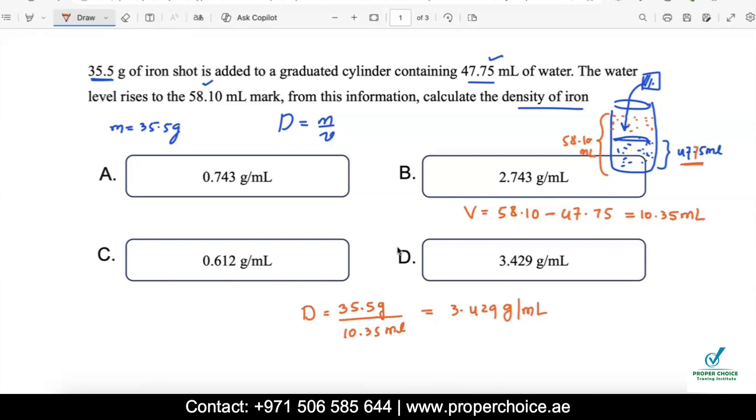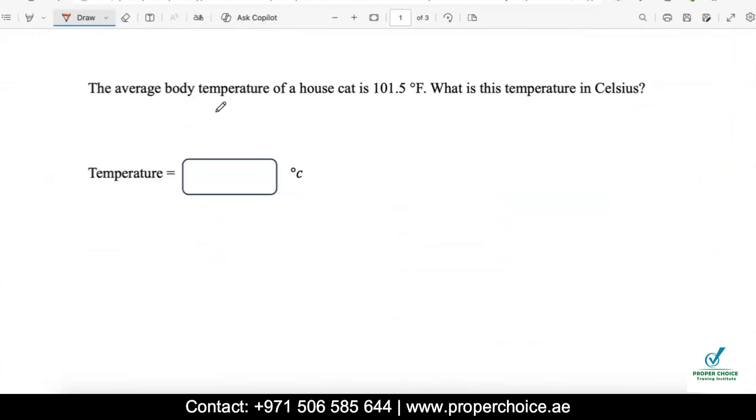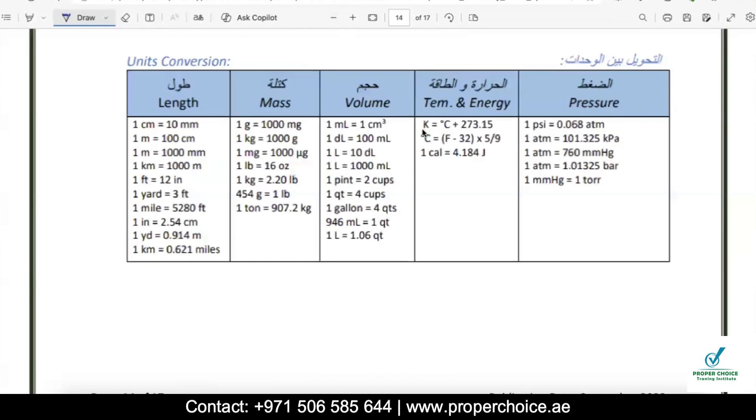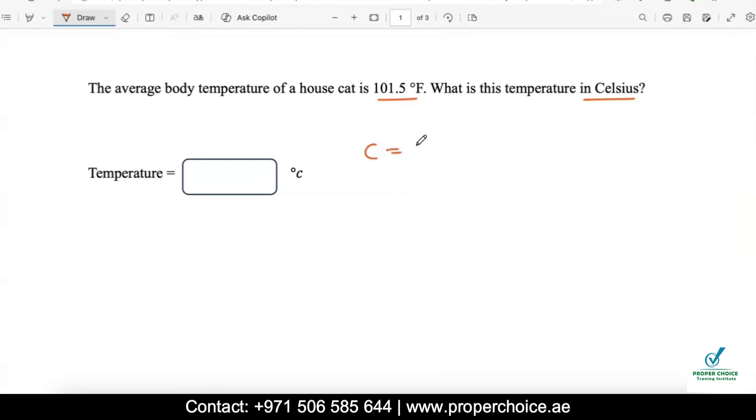The average body temperature of a house cat is 101.5 degrees Fahrenheit. What is this temperature in Celsius? They are asking you simply about the temperature conversion. Need not to worry, the formula related to it will be given to us. How do we represent the relation between degree Celsius and Fahrenheit? Refer to the data sheet. As you can see, the temperature in degree Celsius is equivalent to F minus 32 times 5 by 9. F is representing the temperature in degree Fahrenheit. So use this equation and solve it.